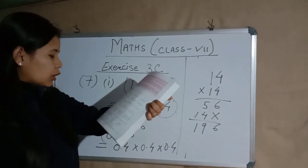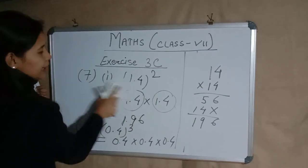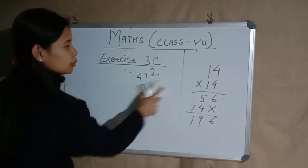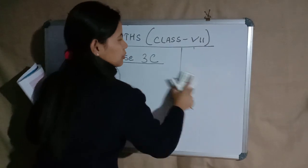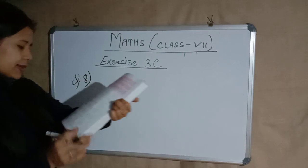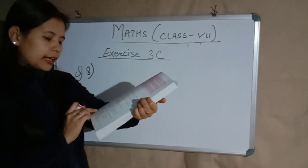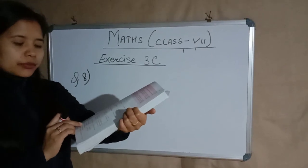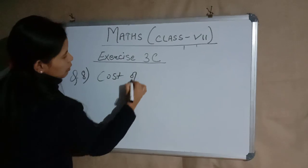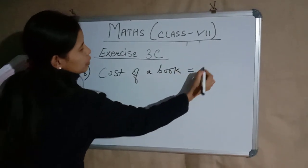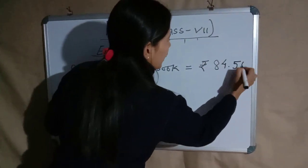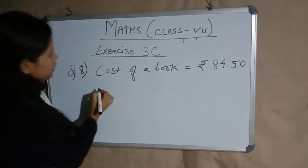Now we have a word problem. Questions 8, 9, and 10 — I will be doing question 8 for you; questions 9 and 10 are a similar type, so you all try those on your own. Question 8 says: the cost of a book is ₹84.50. Find the cost of 13 such books. So, cost of one book = ₹84.50. We need to find the cost of 13 such books.